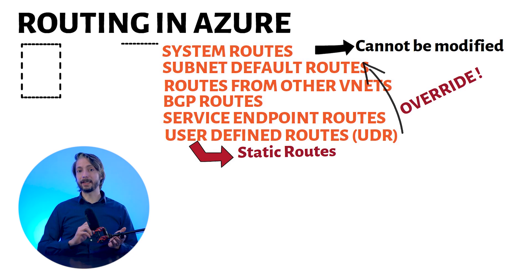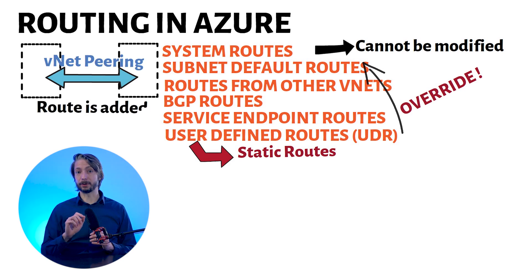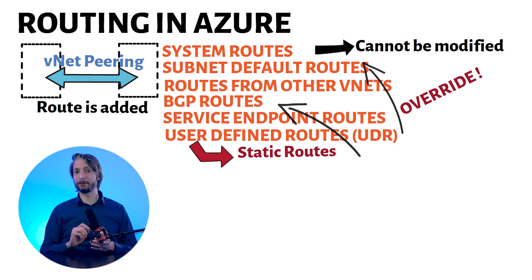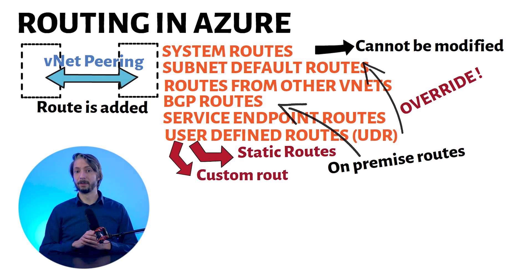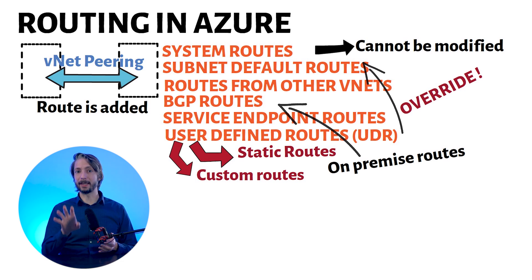When you create a virtual network peering between two virtual networks, a route is added for each address range within the address space of each virtual network a peering is created for. If your on-premises network gateway exchanges Border Gateway Protocol (BGP) routes with an Azure virtual network gateway, a route is added for each route propagated from the on-premises network gateway, and these routes appear in the routing table as BGP routes. User-defined routes (UDRs), also called custom routes, are created in Azure to overwrite Azure's default system routes or to add additional routes to a subnet's route table. In Azure, you create a route table and then associate the route table to virtual network subnets.